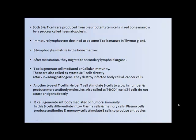T cells are also called cytotoxic T cells. They directly attack invading pathogens and destroy infected body cells and cancer cells. Another type of T cell is the helper T cell, which stimulates B cells to grow in number and produce more antibody molecules. Helper T cells are also called CD4 cells and do not attack antigens directly. B cells generate antibody-mediated or humoral immunity. B cells differentiate into plasma cells and memory cells. Plasma cells produce antibodies, and memory cells stimulate B cells to produce antibodies.